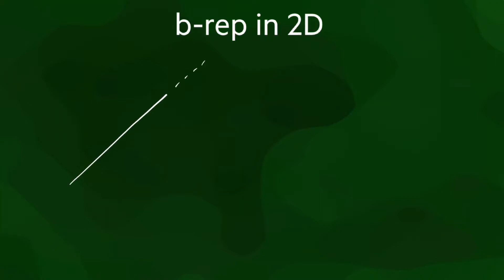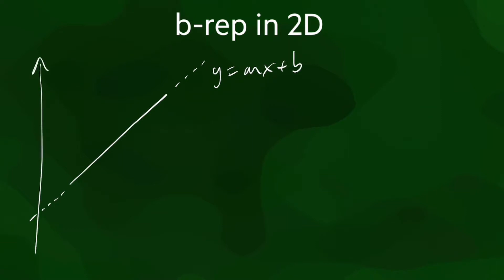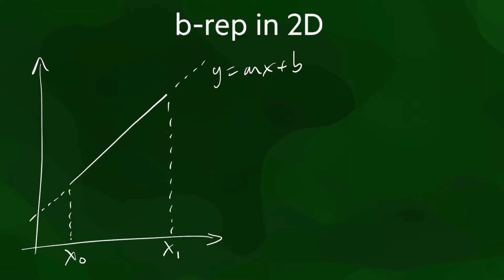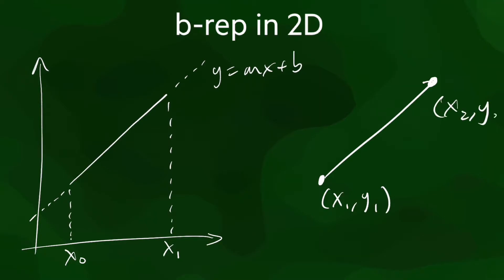We can represent a line segment using a line equation with an interval as a parameter that tells us where it starts and ends, but this is a rather inconvenient method. Instead, the most common representations for line segments use boundary representation. We therefore represent a line segment using the coordinates of its two endpoints, which are its boundary.